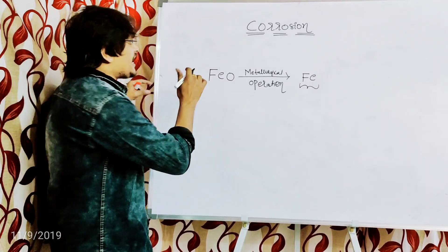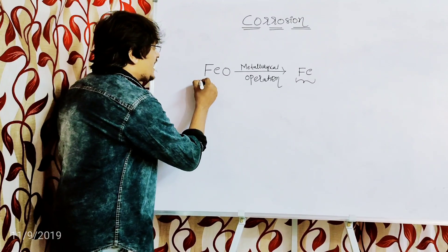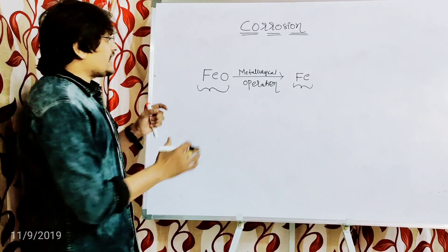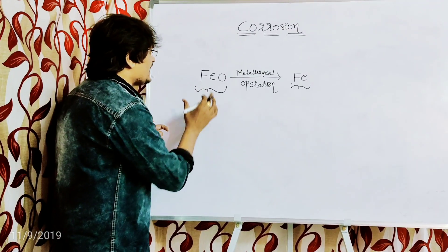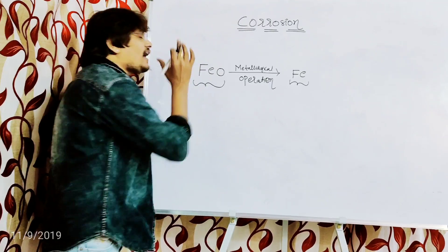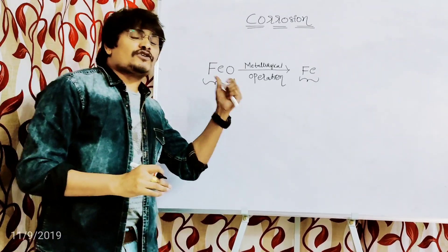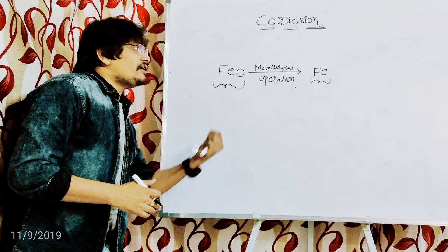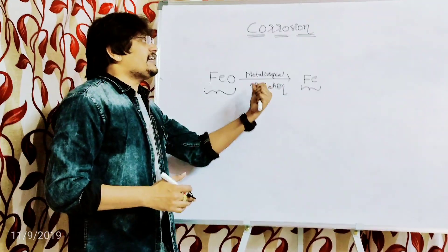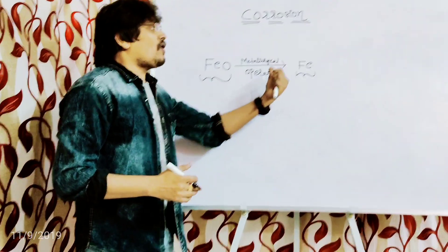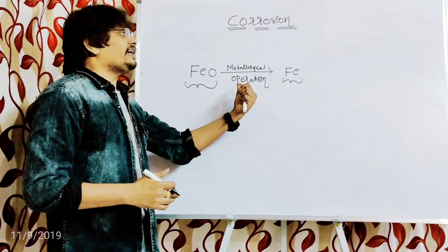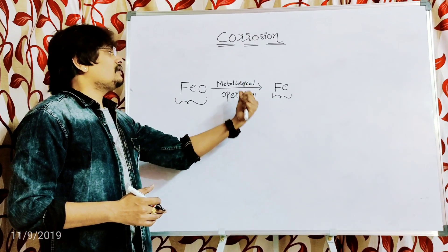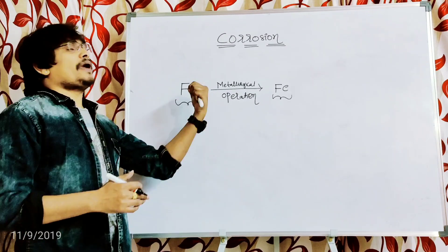Iron oxide is the natural form of iron. But since we need iron in its individual form — because it is more significant in the individual form compared to iron oxide which is the combined form — we are extracting it from the oxygen.